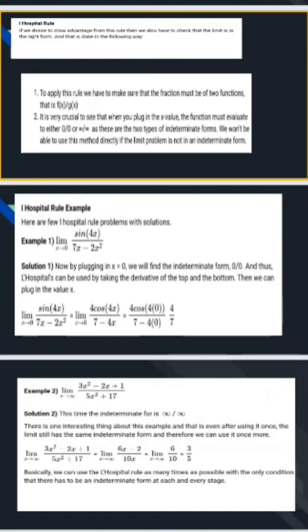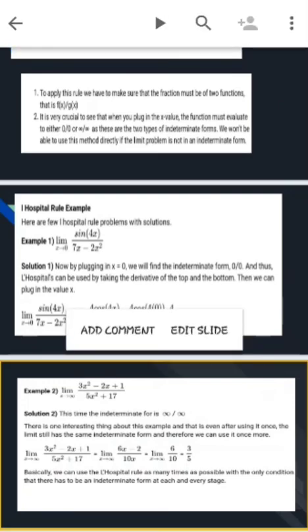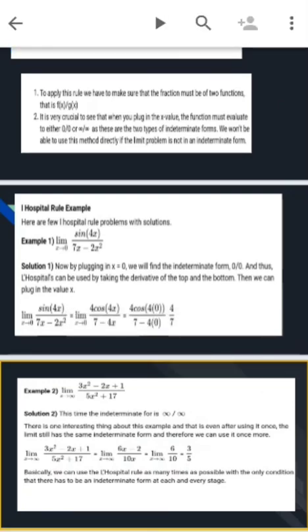There is one interesting thing about this example. That is even after using it once, the limit will still have the same indeterminate form and therefore we can use it once more. Limit x tends to infinity 3x squared minus 2x plus 1 by 5x squared plus 17 equals limit x tends to infinity 6x minus 2 by 10x equals limit x tends to infinity 6 by 10. Here by cancelling, we get 3 by 5.